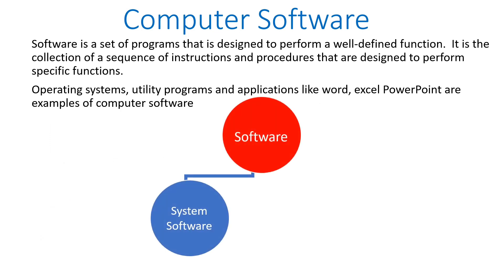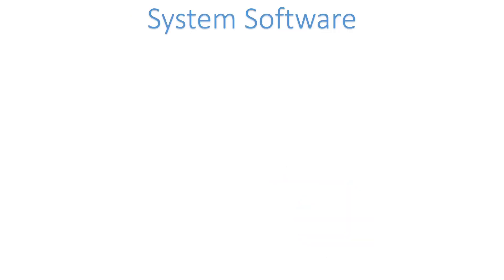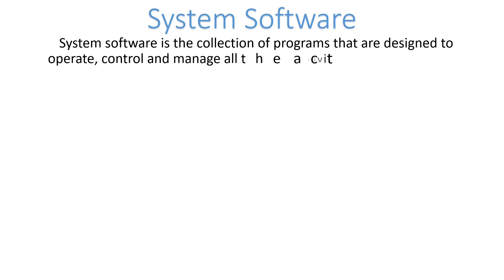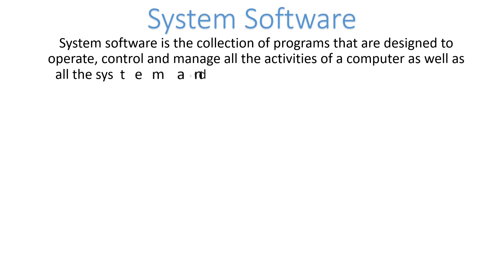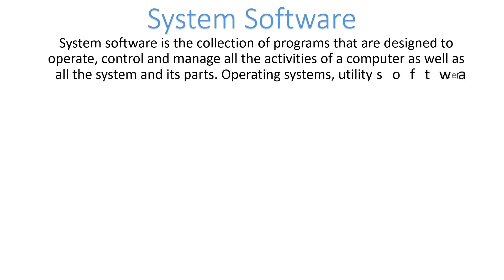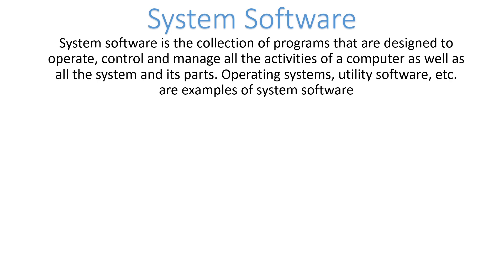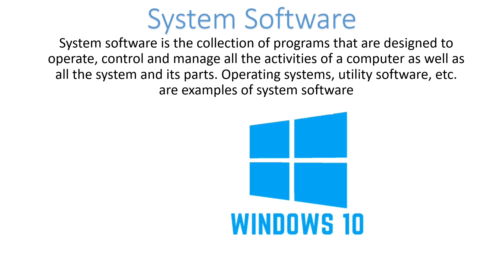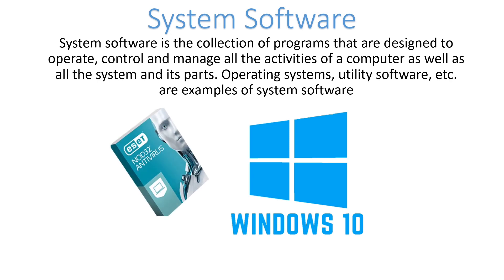System software is the collection of programs designed to operate, control, and manage all the activities of the computer system as well as its parts. Operating systems like Windows 10 or 11 and utility programs like antivirus are some examples of system software.